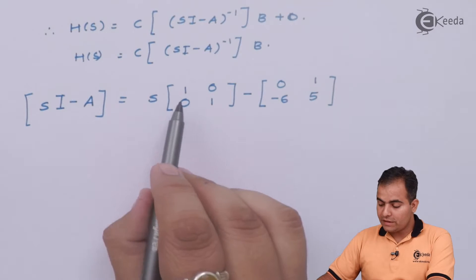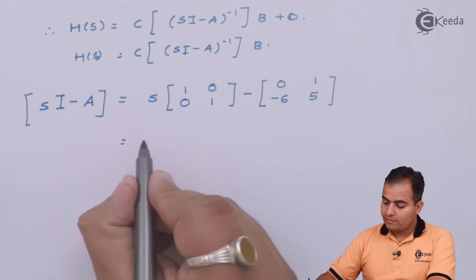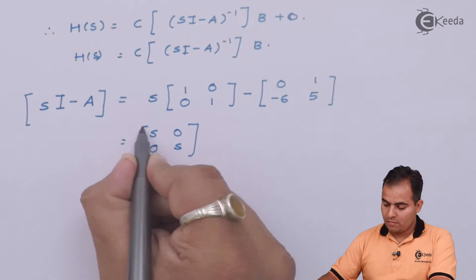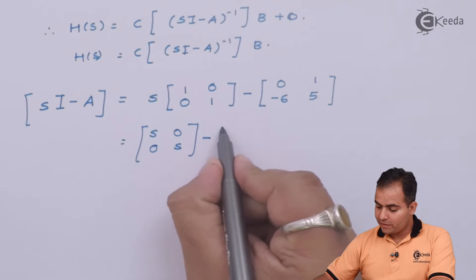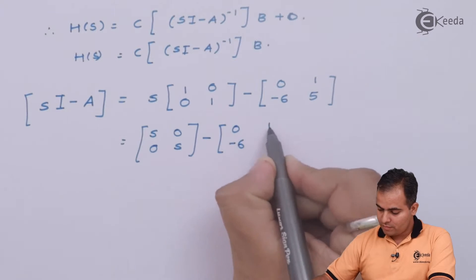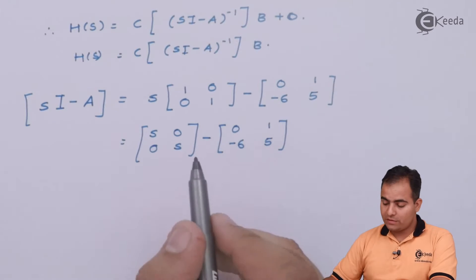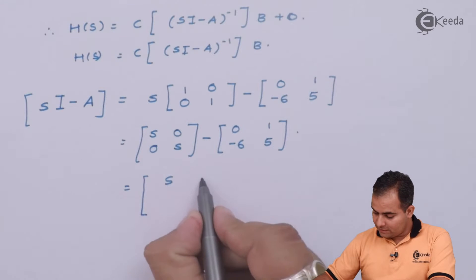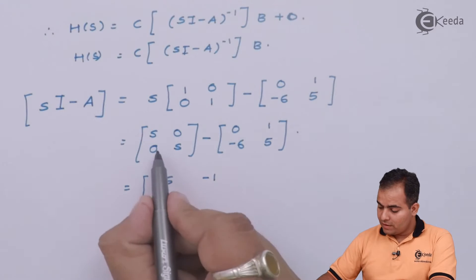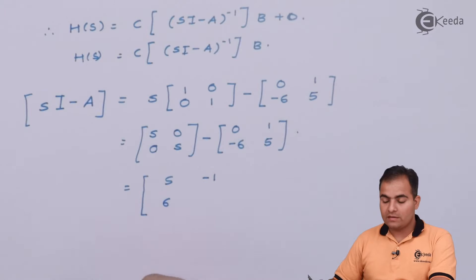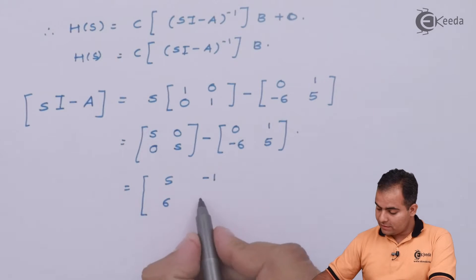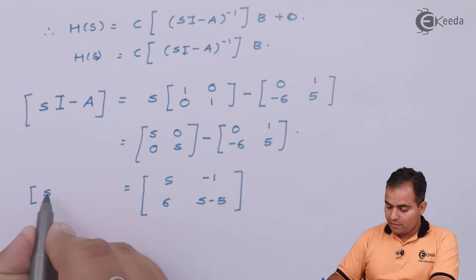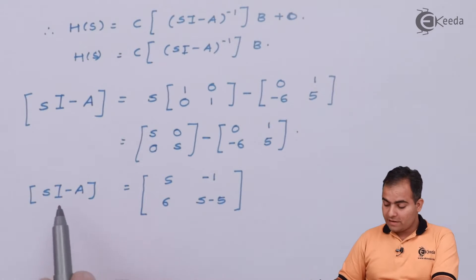First I multiply S with each element of the identity matrix: s·1 = s and s·0 = 0. Then I subtract the A matrix. So: S - 0 = S, 0 - 1 = -1, 0 - (-6) = +6, and S - 5 = S - 5. This gives me the matrix (sI - A).